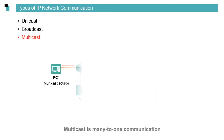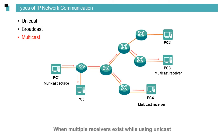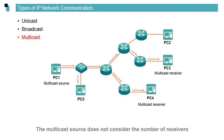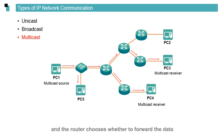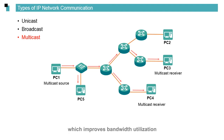Multicast is many-to-one communication. In this example, PC1 is a media site, and PC3 and PC4 are media receivers. When multiple receivers exist while using unicast, sending the same data increases the cost of links and decreases efficiency, since the information must be sent multiple times. Therefore, the multicast mode is preferable in such scenarios. The multicast source does not consider the number of receivers — it just sends data to the network, and a router chooses whether to forward the data. In this manner, only one piece of data is transmitted over a link at a time, which improves bandwidth utilization.